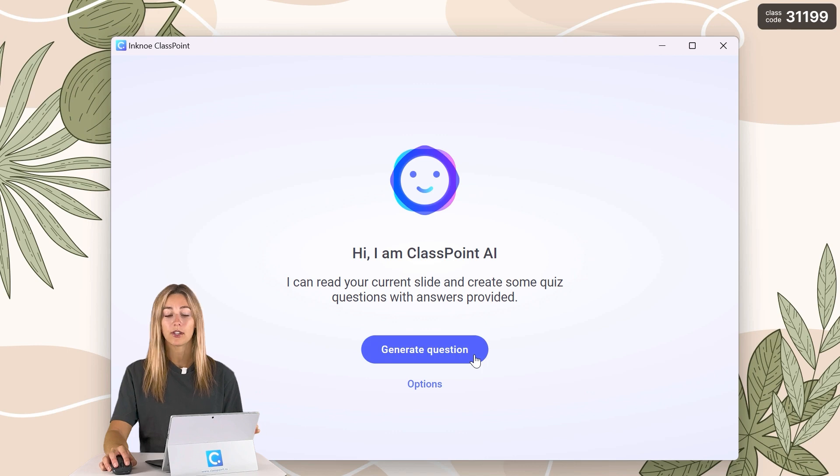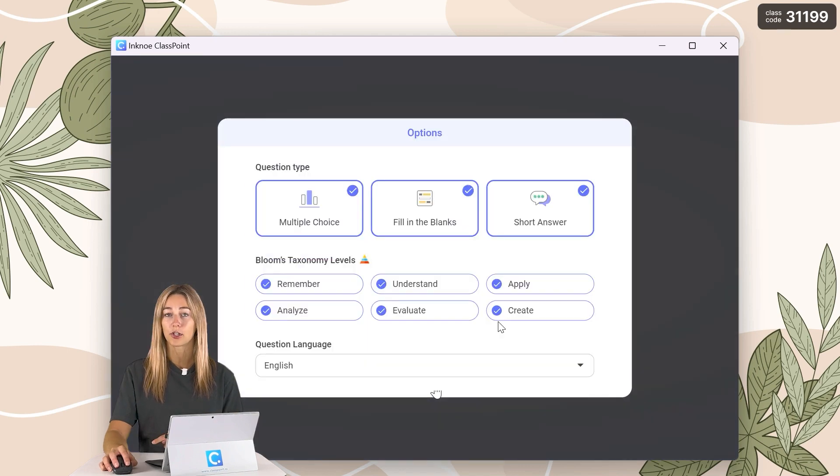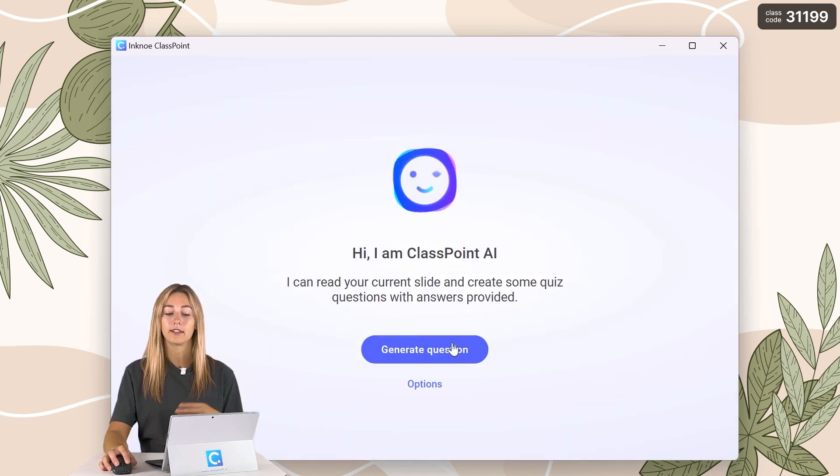Before we generate some questions, let's change our options first. You can change the different level of questions that will be generated. However, I want this quiz to be pretty general, so I'm going to keep all of them set here, but I will uncheck short answer and fill in the blanks and just keep multiple choice, because we're going to be using ClassPoint's quiz competition mode which will auto award stars or points to our audience and comes with a really nice Excel summary. When those options are set, we can generate a question.